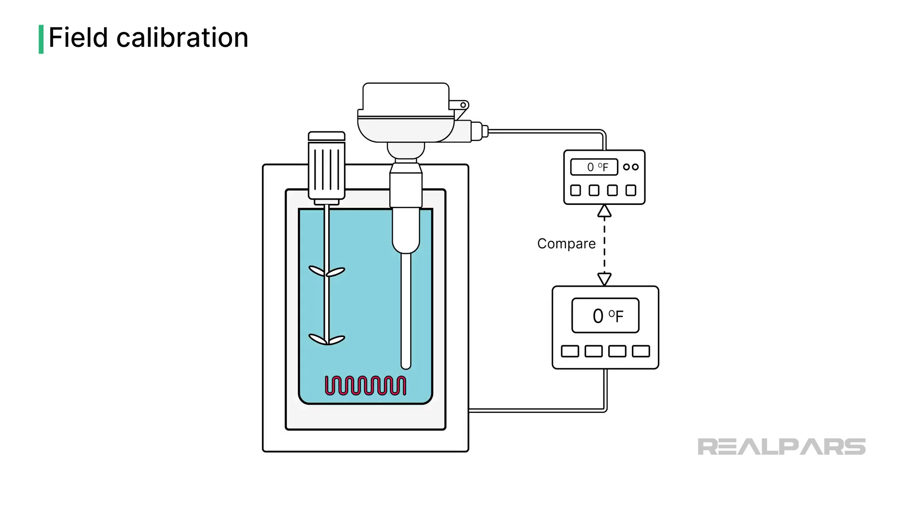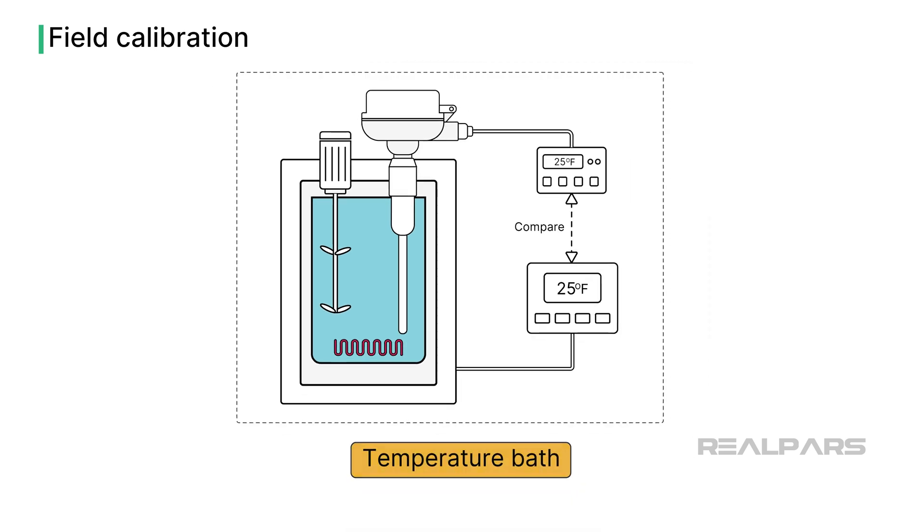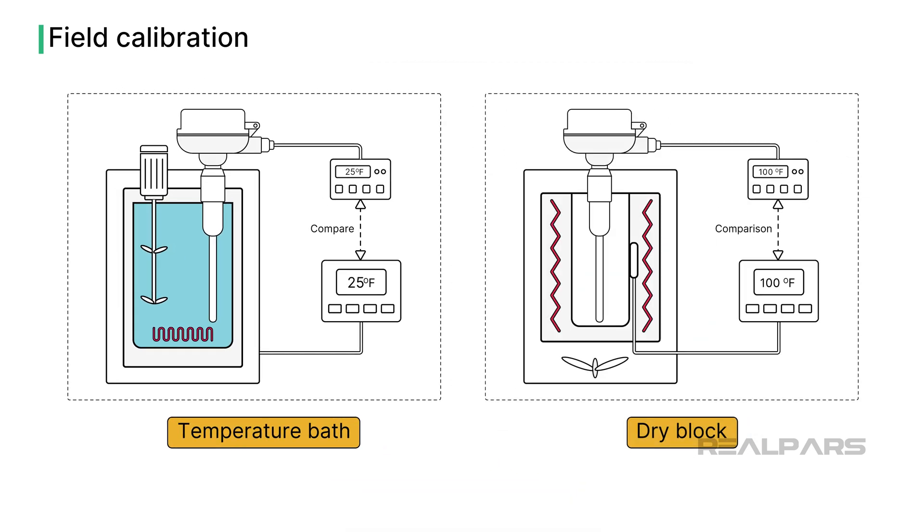Calibrating an RTD involves comparing its resistance output to a known temperature standard using a temperature bath or a dry block calibrator, providing precise temperature conditions.